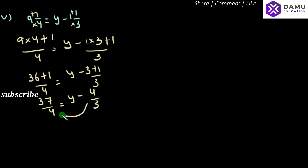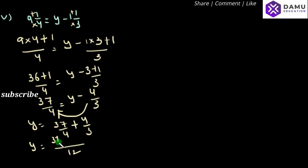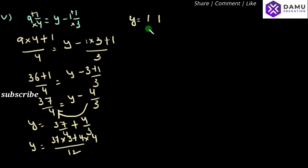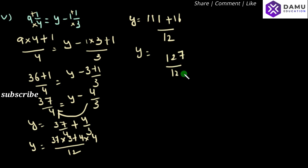Shifting minus 4 by 3 to the left side: y equals 37 by 4 plus 4 by 3. Take LCM of 4 and 3, which is 12. So 37 into 3 plus 4 into 4, all over 12. That gives 111 plus 16 by 12, which equals 127 by 12. Therefore y equals 127 by 12.